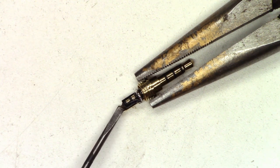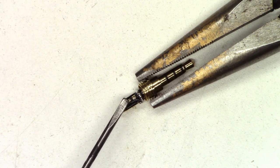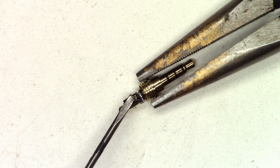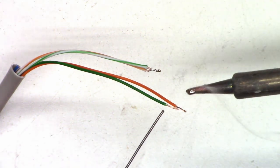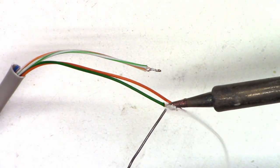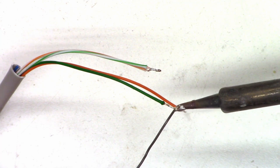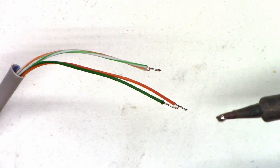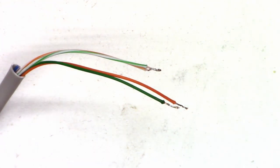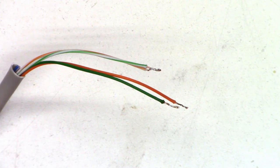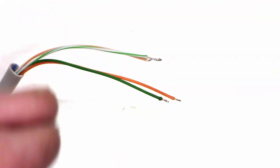So now all we have to do is go ahead and attach our leads. Ground is going to go to right here. Left channel to here. Right channel to here. I'm just going to tin those. This is the green. And this is the orange. Now we'll go ahead and trim those off a little bit to make it a little bit shorter so they'll fit a little bit better. There we go.